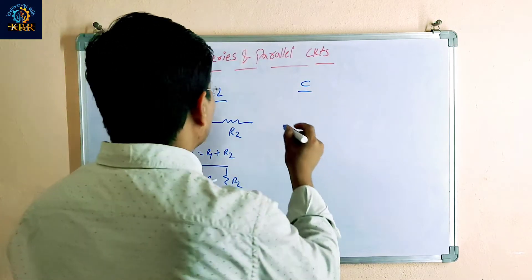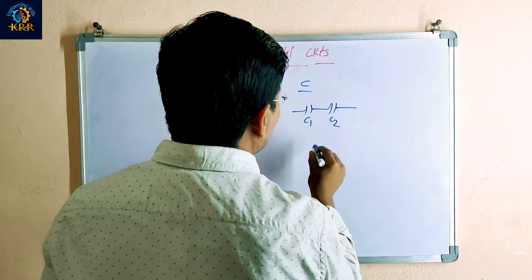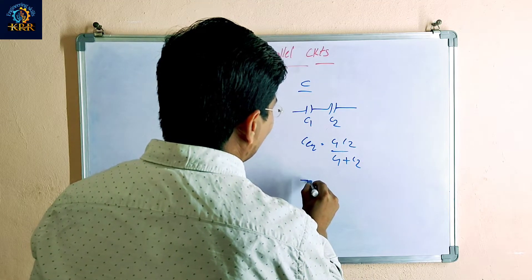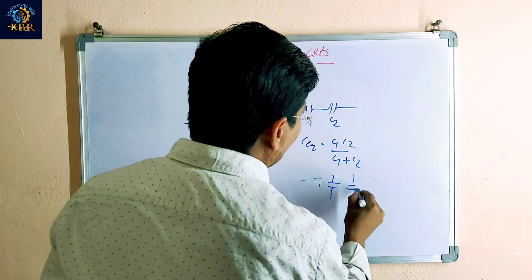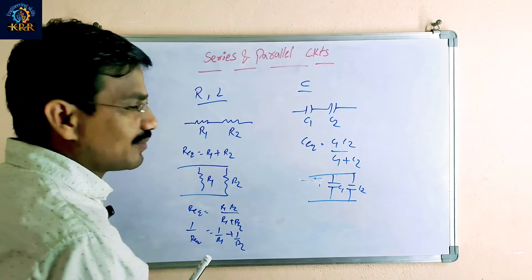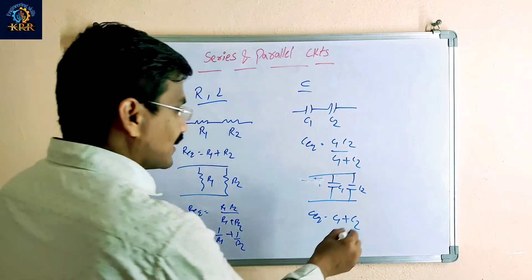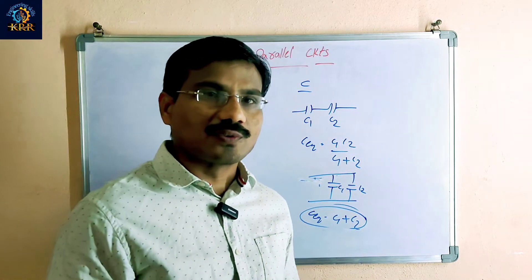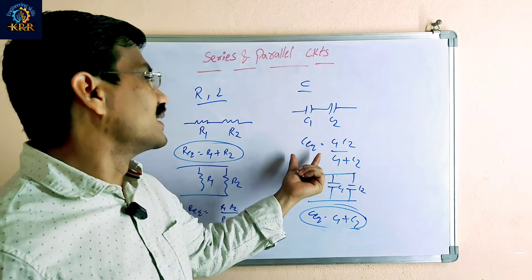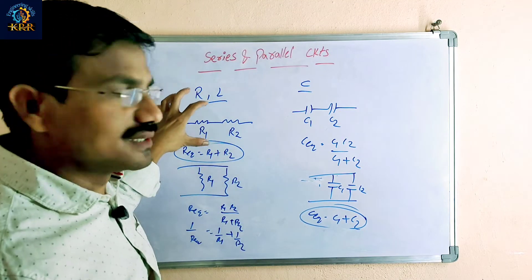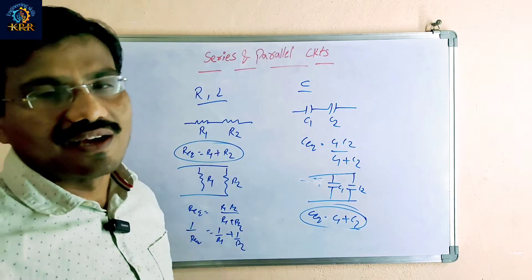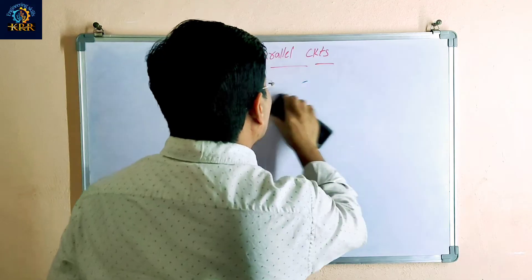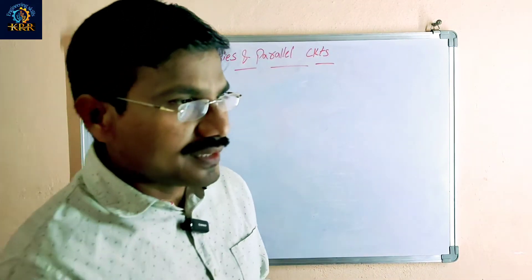The capacitor is quite different. Two capacitors in series: C equivalent is equal to C1 times C2 divided by C1 plus C2. Two capacitors in parallel: C equivalent is equal to C1 plus C2. So resistor and inductor behave the same, but capacitor is the opposite — series becomes the product-over-sum formula.